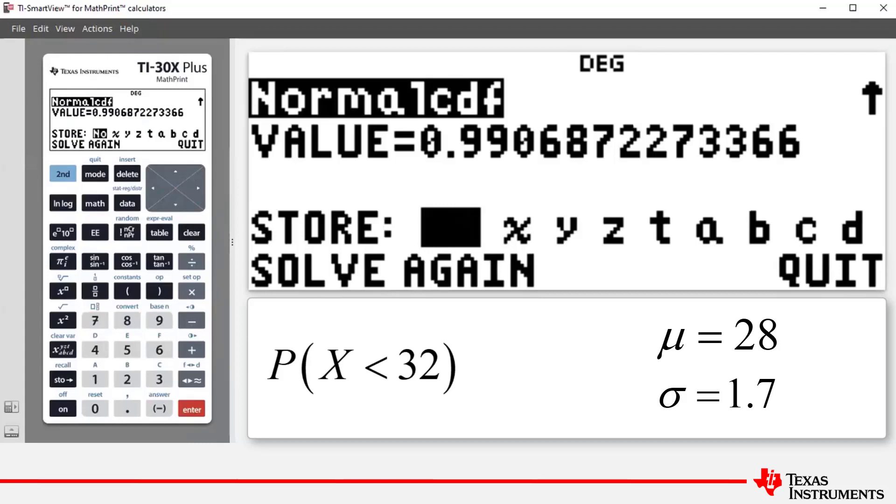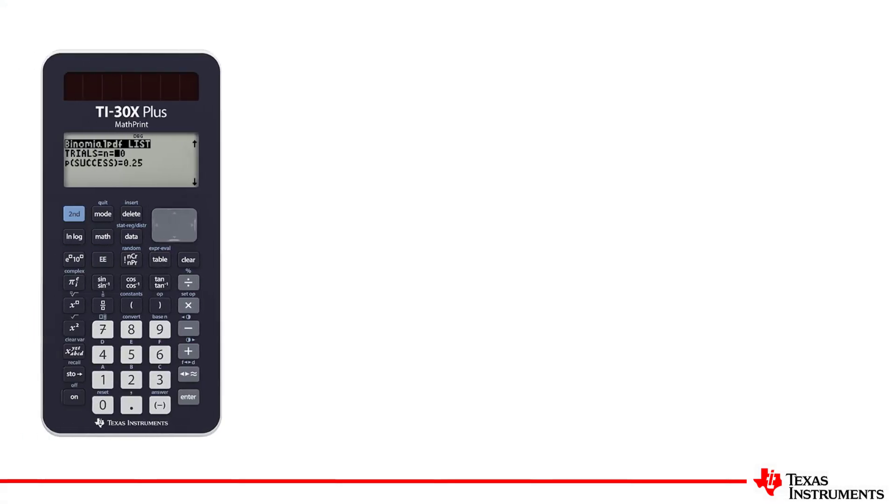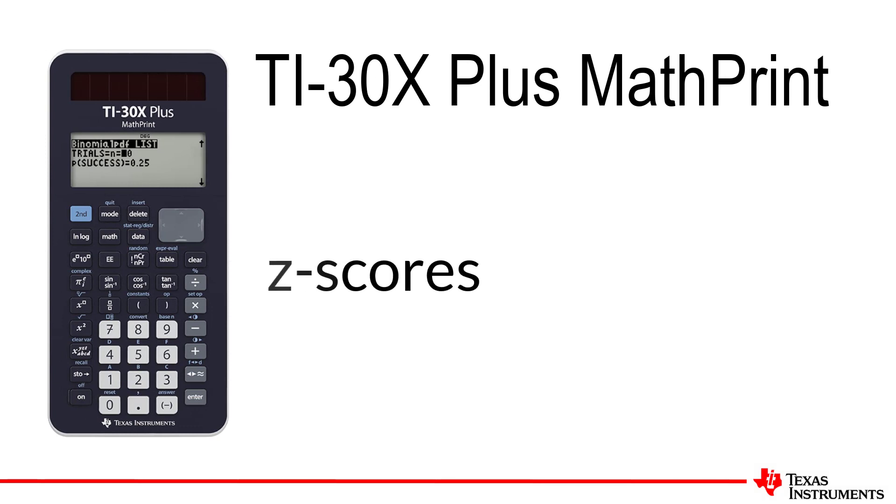Now we've finished this particular problem. Again, you have access to the possibility of storing that probability if you need it, but we're going to arrow down and then arrow to the right to highlight quit and press enter, and it takes us back to the home screen. That's it for this lesson. Thanks for watching and see you next time.